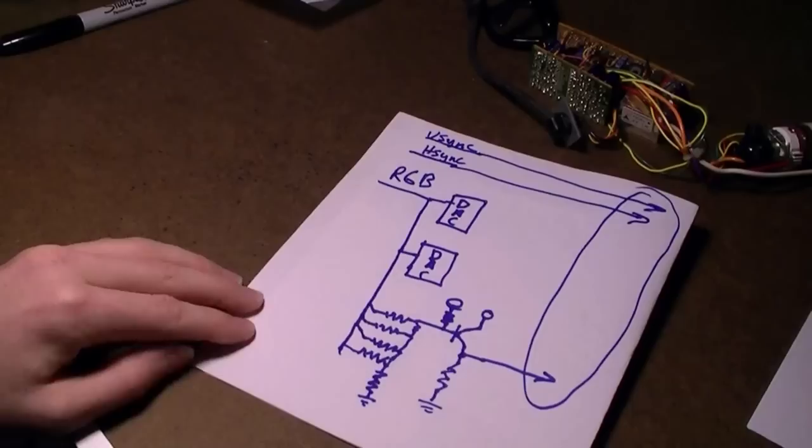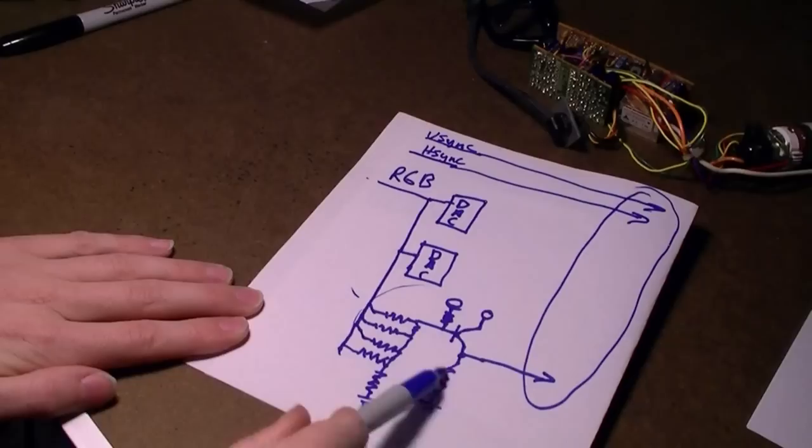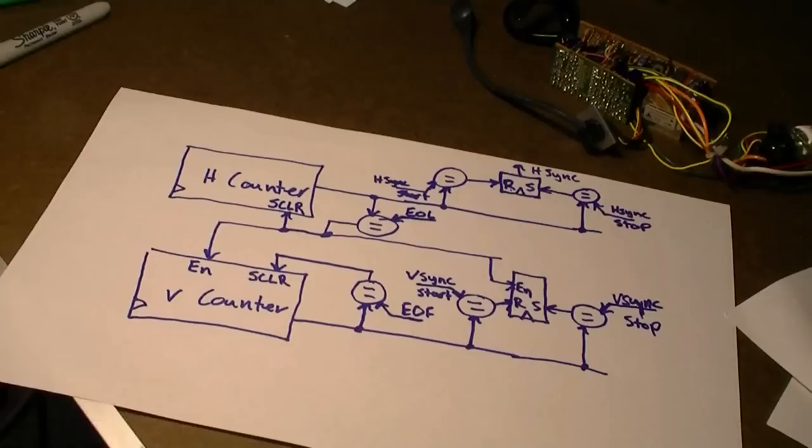The physical interface to the VGA connector is pretty simple. It's an R2R ladder for each of the red, green, and blue, each of which has a single transistor emitter follower as a buffer, and a straight connection for the horizontal and vertical sync pins.